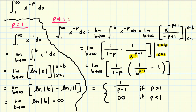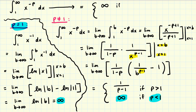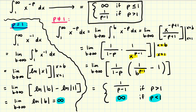Summarizing our original improper integral: it diverges and goes off to infinity if p is less than or equal to one. If p is greater than one, the improper integral converges and equals 1 over p minus 1. That is our final answer.